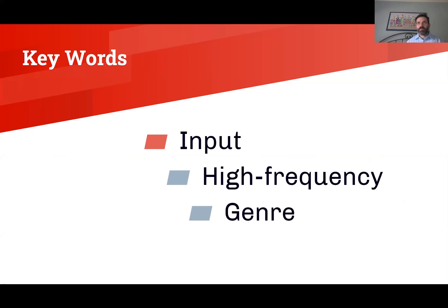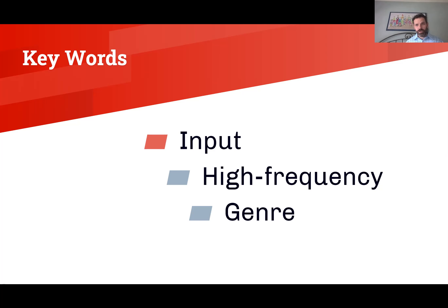High frequency is an adjective that refers to vocabulary that occurs often in the language. High frequency words are words that our students are more likely to know. Low frequency words — especially content area vocabulary specific to the topic we're teaching — may be vocabulary we need to teach our students. Genre can refer to the specific structure and style of a text that may change depending on the content area. Learning how to read different genres can help our students navigate and process texts more effectively.